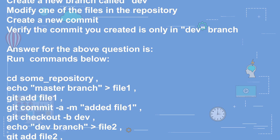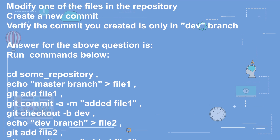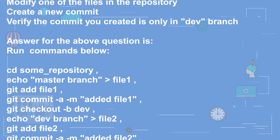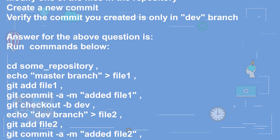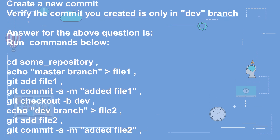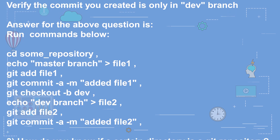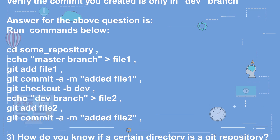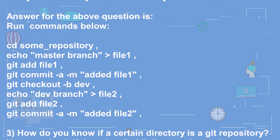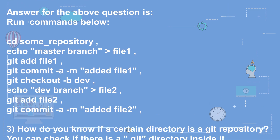Question 3: How do you know if a certain directory is a git repository? Answer: You can check if there is a .git directory inside it.